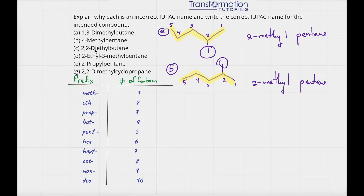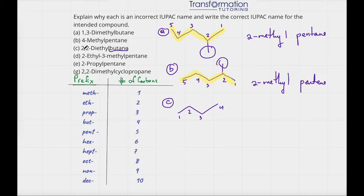Let's go to part C: 2,2-diethylbutane. Butane means 4 carbons, so we draw 4 carbons: 1, 2, 3, 4. We have 2,2-diethyl, so on the second carbon we have two groups of 2 carbons each — one ethyl group and another ethyl group. Now let's erase our numbers and look for the longest chain.